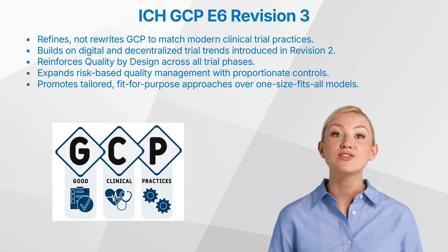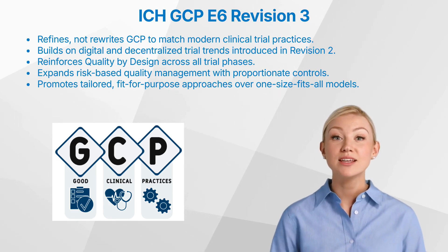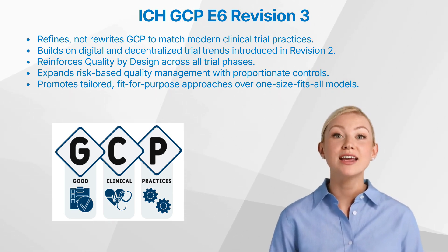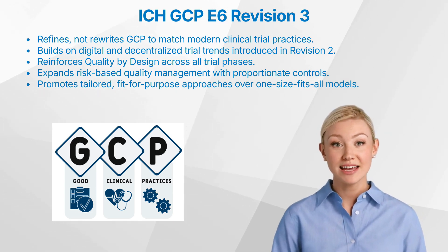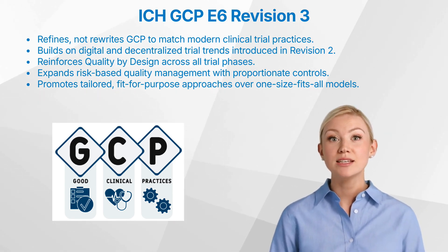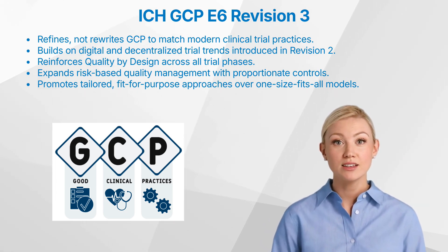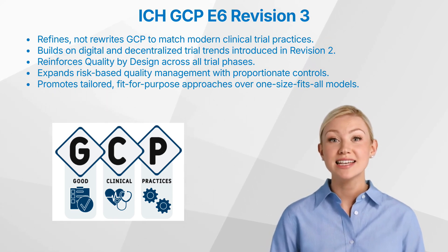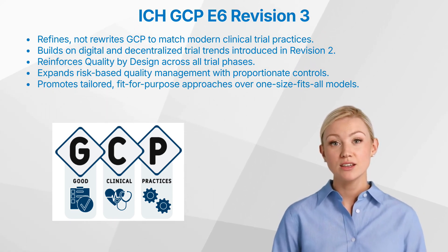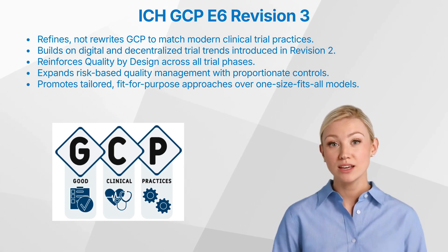A cornerstone of GCP Revision 3 is its intensified focus on quality by design and risk-based quality management. Although these concepts were present in earlier versions, the new guideline pushes for their deeper integration into every facet of trial execution. In practical terms, risk control should be proportionate to the significance of the risk. Not every potential issue warrants the same level of effort, and not all trials necessitate identical procedures. For instance, a low-risk, non-interventional study can and should adopt lean quality processes.